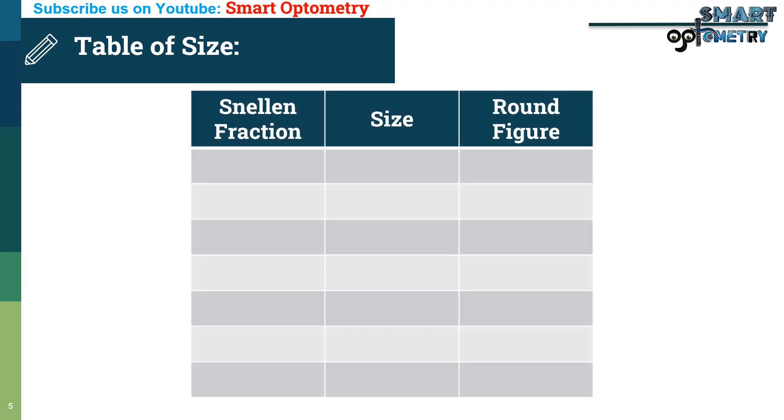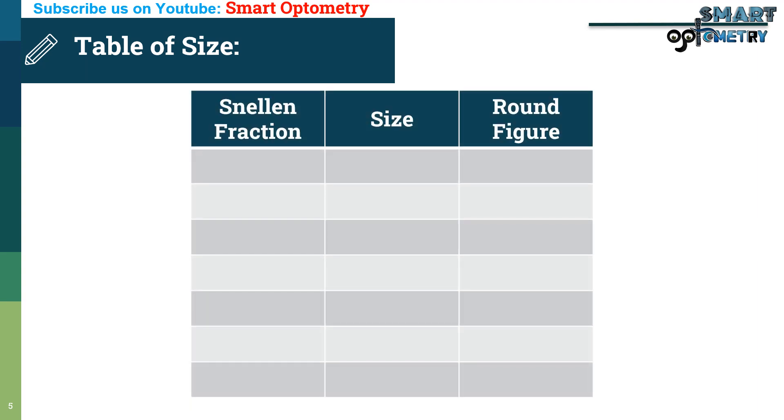Here is a table of Snellen optotype using this formula. Size of 6 by 60, 87 millimeter. Size of 6 by 36, 52.2 millimeter. In round figure 53 millimeter.